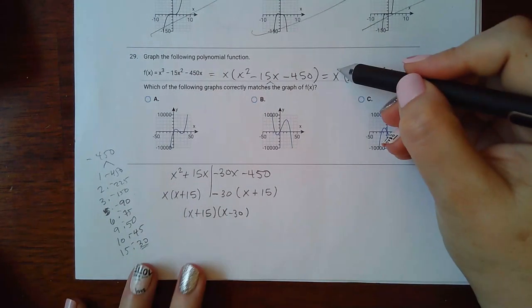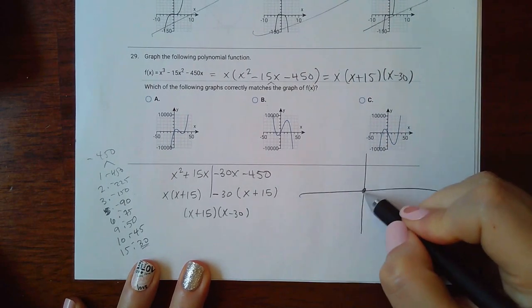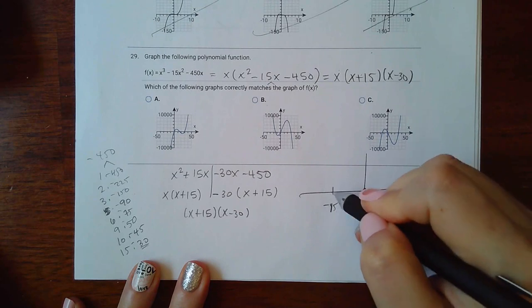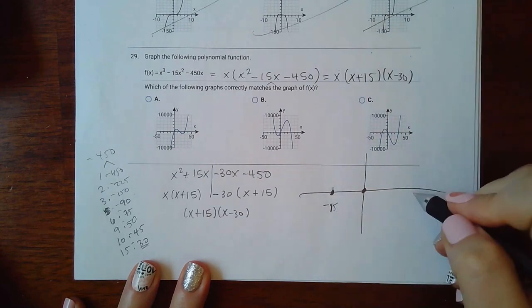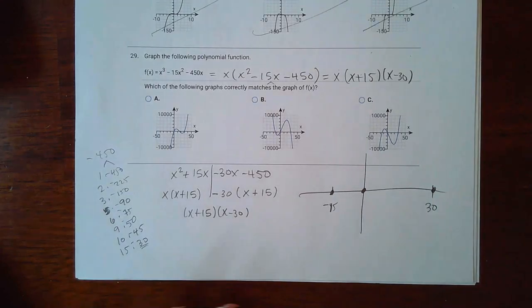So if I set this one equal to 0, I get x equal to 0. If I set that one equal to 0, I'm going to get negative 15. If I set this one equal to 0, I'm going to get positive 30. And those are my x-intercepts.